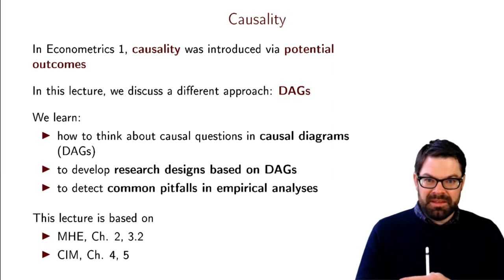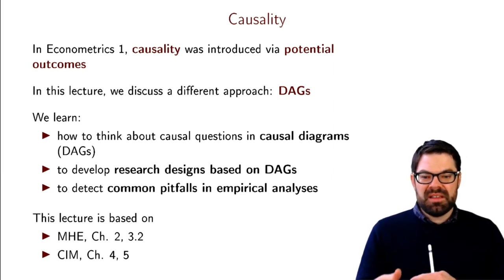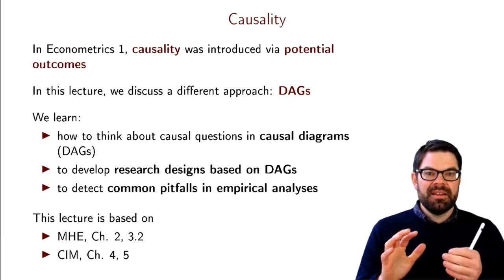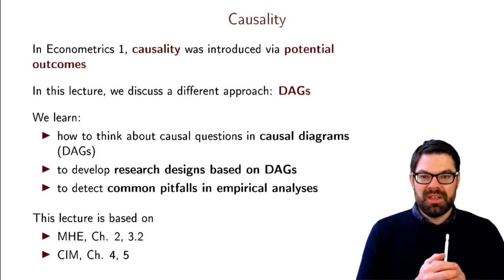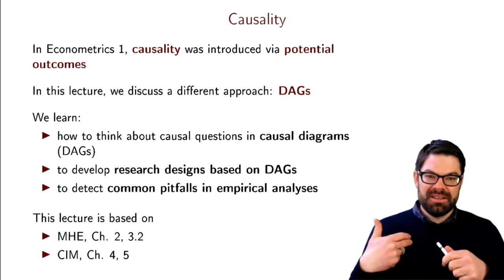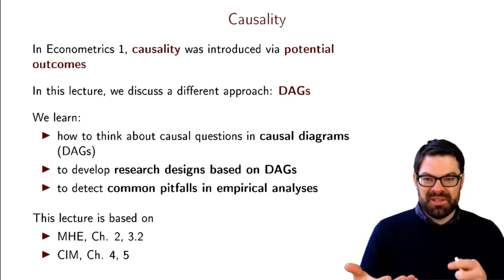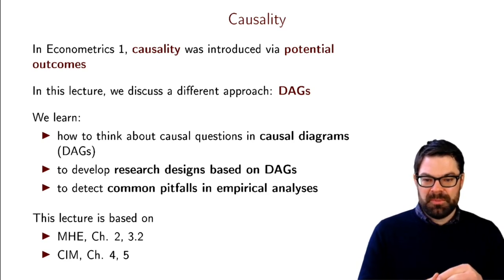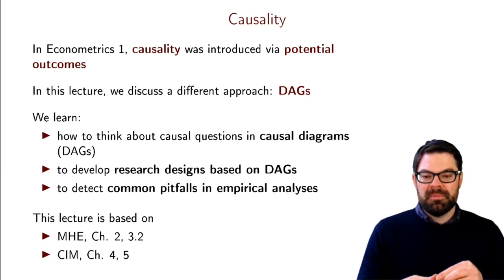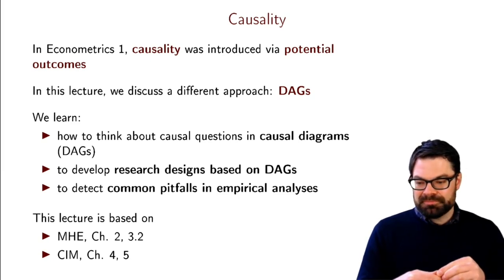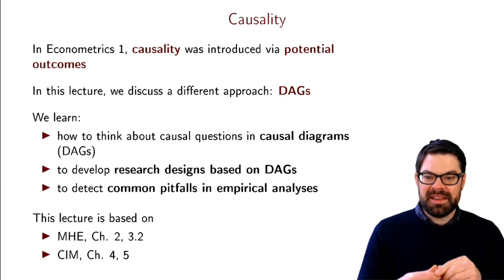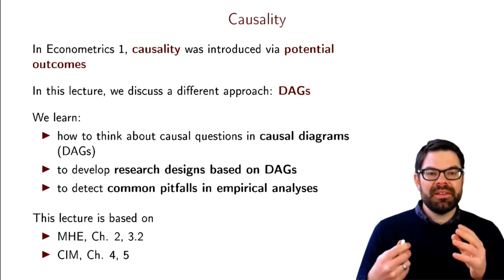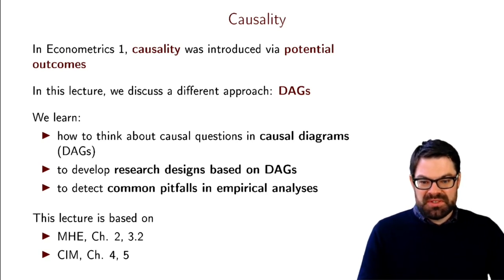What I think DAGs are very important for is that they help us detect common pitfalls in empirical analyses that other techniques — notably the potential outcomes framework — give us a harder time finding or detecting. DAGs will not be a replacement for potential outcomes in most of econometrics, but they are a very useful alternative. If you want to learn more, Scott Cunningham's Causal Inference Mixtape book has an entire chapter that introduces DAGs that I can highly recommend.